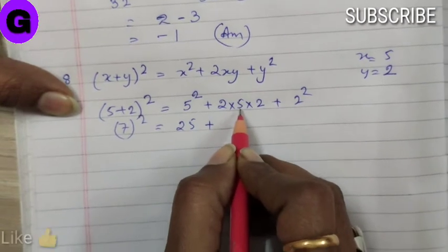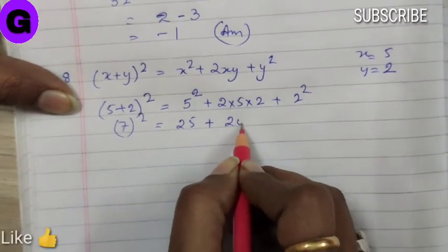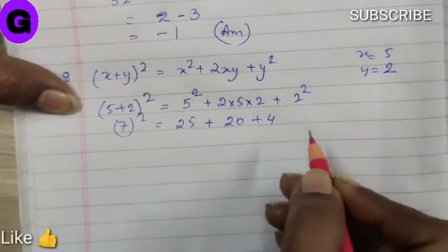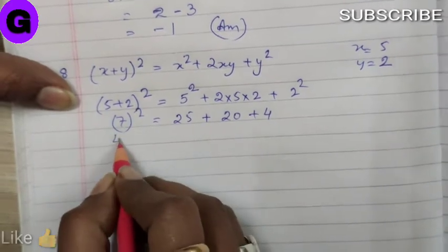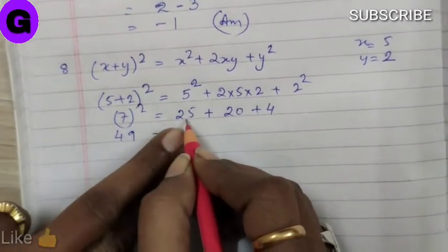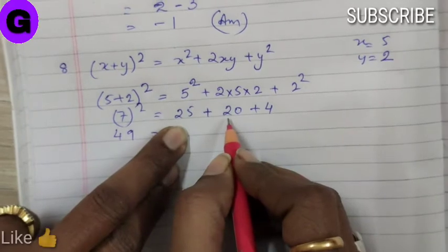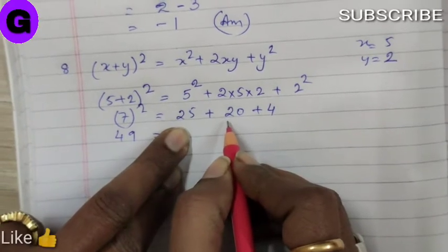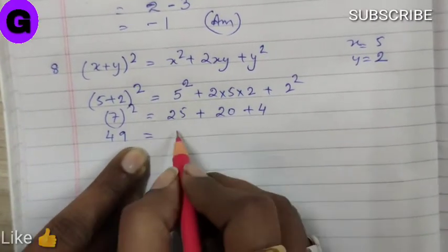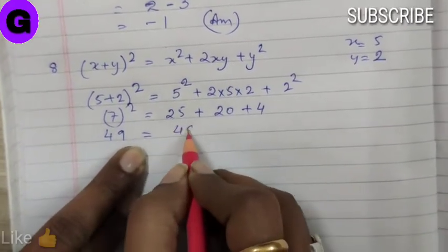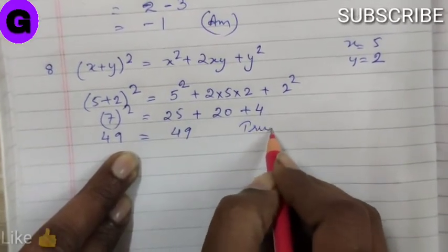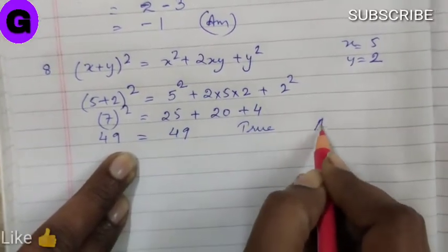5+2 is 7, so 7² = 25 + 20 + 4. 7 sevens are 49, and 25+20=45, 45+4=49. They are equal.